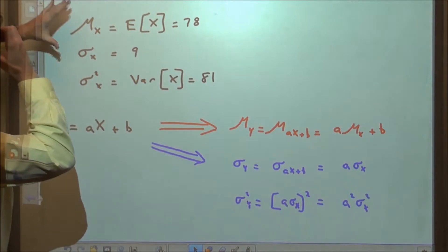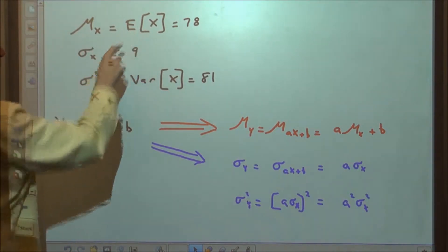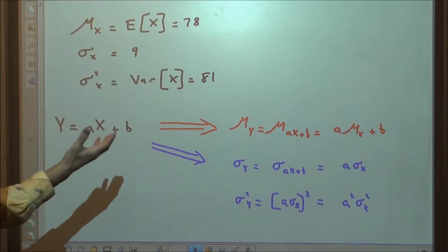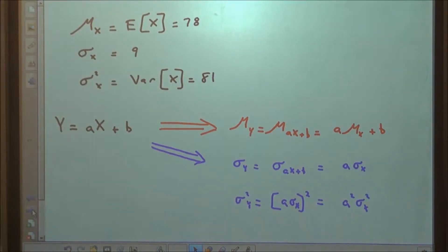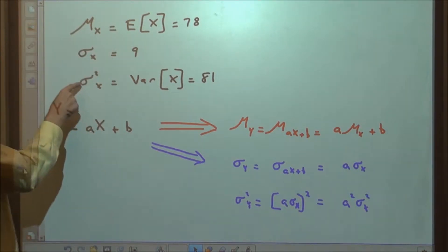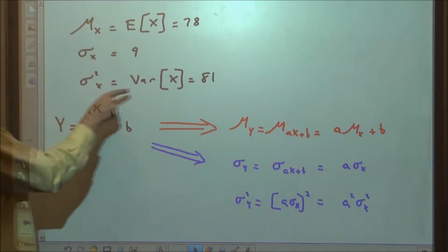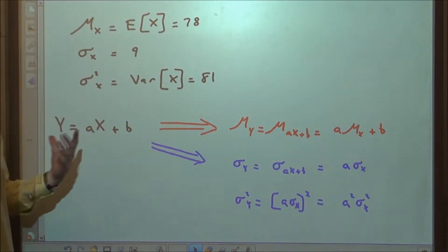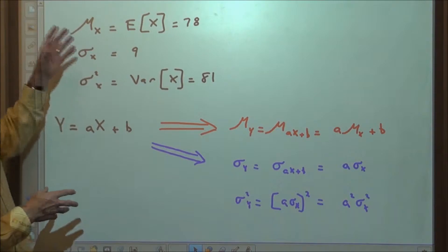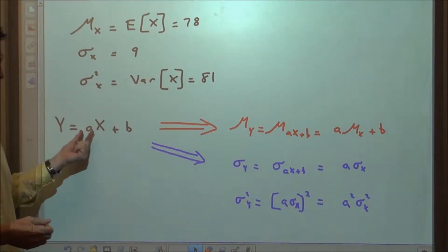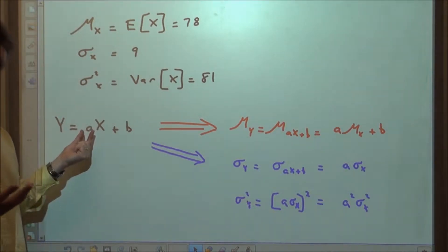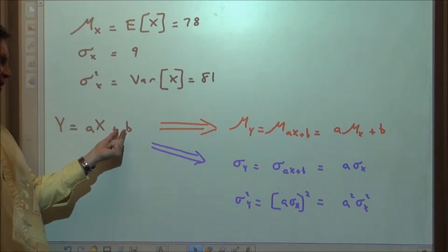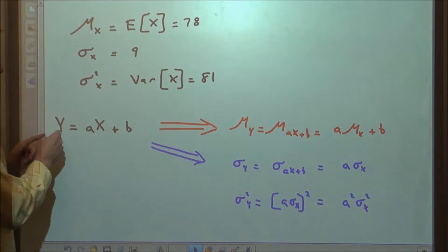We can show the mean of x as the expected value of x — get used to that nomenclature. Let's suppose the true standard deviation of this distribution of scores was 9, and the variance would be shown as 81. Now let's suppose we're going to transform this random variable x: we're going to multiply all the scores by a value and then add a certain amount to all the scores. We'll call this new random variable y.